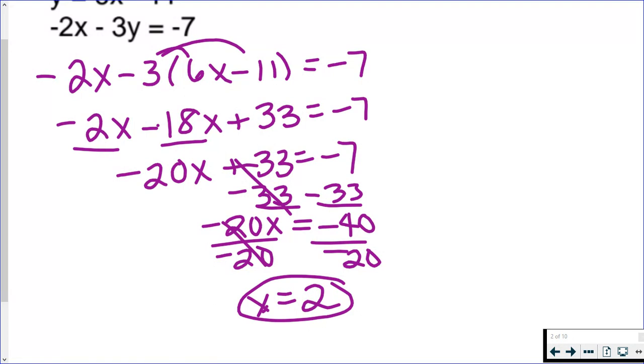So I have my x value, which means I have half of my solution. Whenever you're solving a system, you're finding both variables in the equations. So in this case, you need to be solving for both x and y. So far, I have x equals 2.